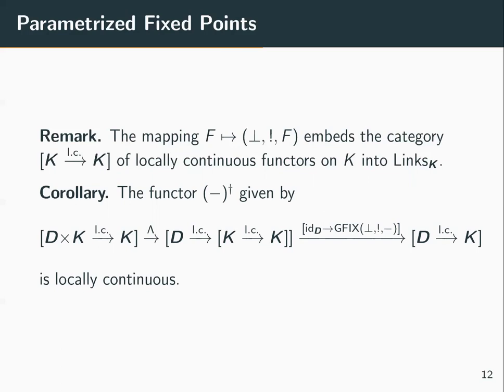This parametrized fixed point is a locally continuous functor, and it coincides on objects with the usual definitions found, for example, in the domain theory chapter of the Handbook of Logic and Computer Science. We implicitly assumed that K has enough colimits, an initial object, and strict morphisms.